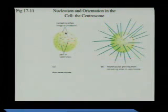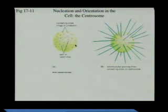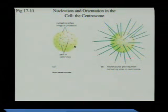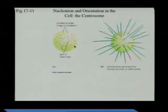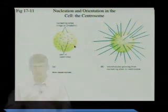We have a centrosome, an area of the cell that has the two centrioles inside. There are also rings of material called gamma tubulin, and this makes a little ring — a little lock washer — that's about the same size as a microtubule. It helps to cap the minus end.